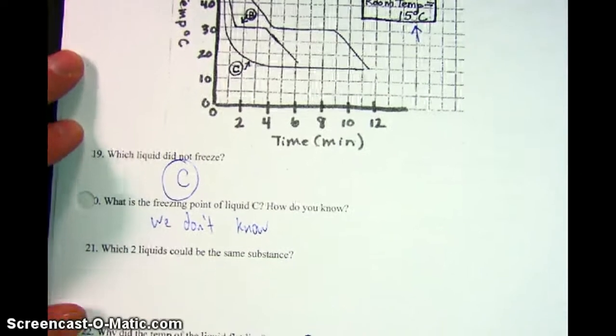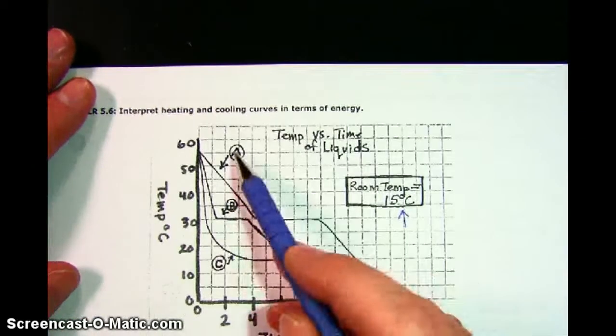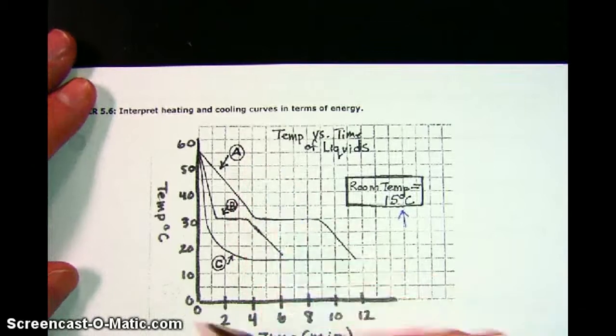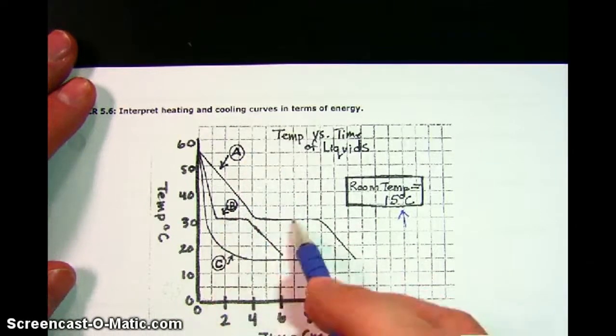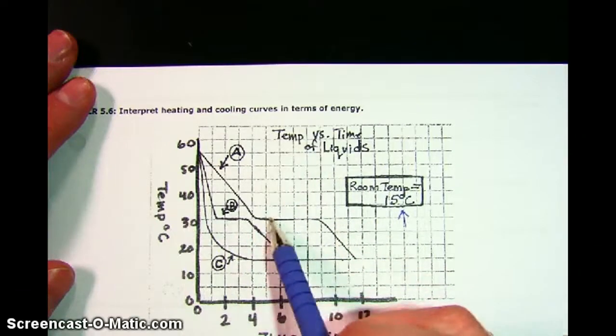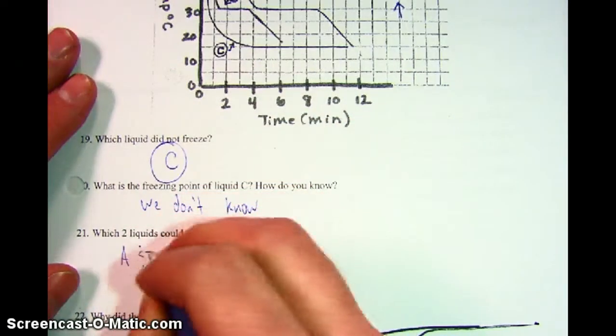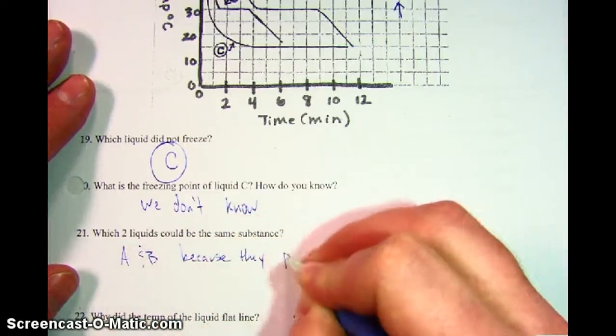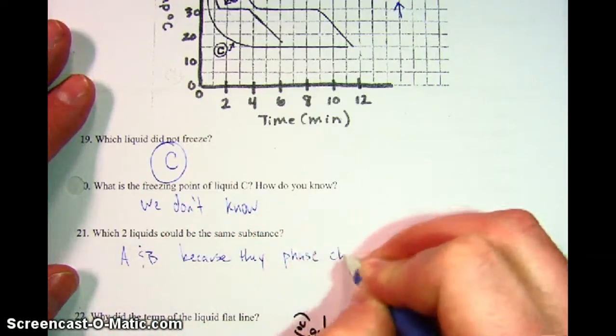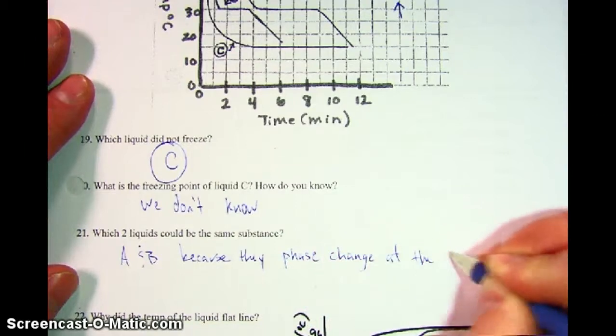Number 21, which two liquids could be the same substance? Well, the two liquids that could be the same substance are A and B. The reason is because they have the same phase change point. And we're led to believe that these are freezing points.